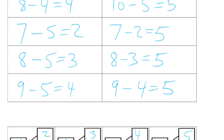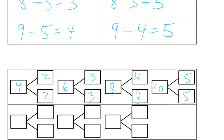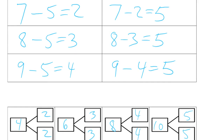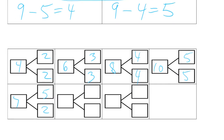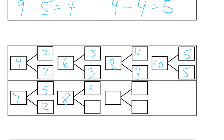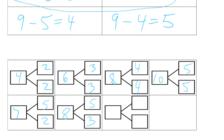And then we have seven, five, and two. And then we have eight, five, and three. And the last number bond, you can see it up here — nine, five, and four.